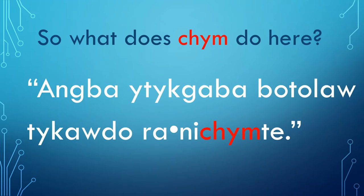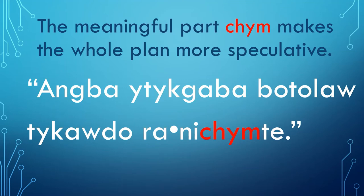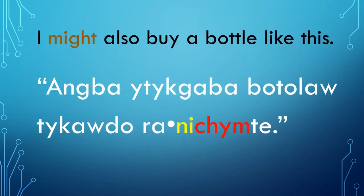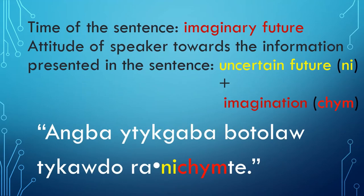So what does Chm do here? What is its meaning? The meaningful part Chm makes the whole plan more speculative — meaning that Bandi is not actually buying such a bottle now, but he might buy one. It is not reality; it is imagination. In English, this might be translated as: I might also buy a bottle like this. The sentence is talking about an uncertain and imaginary future. The speaker indicates that the information is uncertain and imaginary by using Ni for uncertainty about the future and Chm for imaginary.